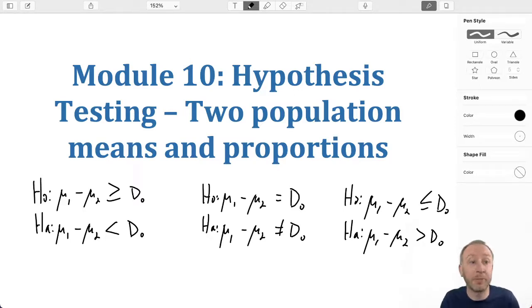Similarities: same options of test - Lower Tail, Upper Tail, Two Tail Test. Differences: now we've got two populations in here, and now we're testing for a hypothesized difference value.